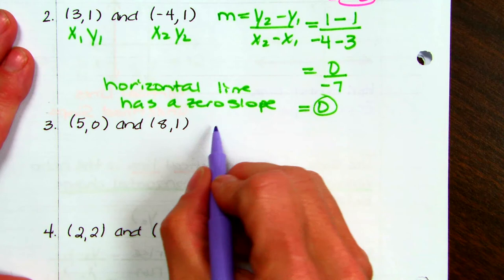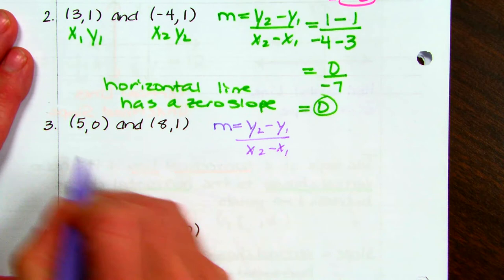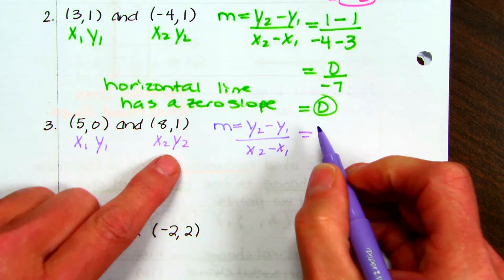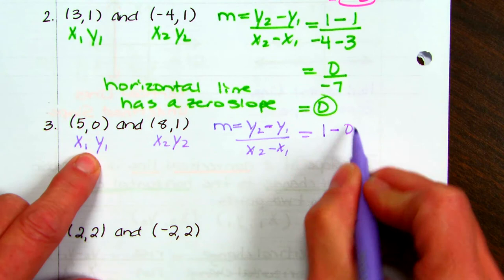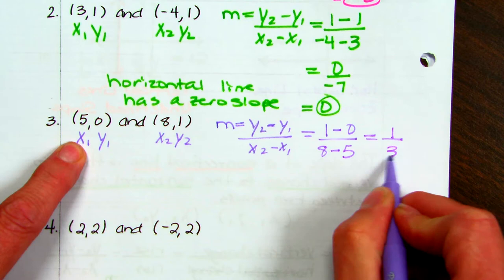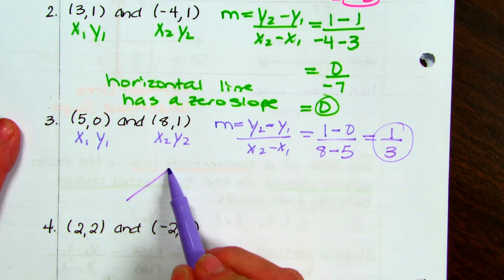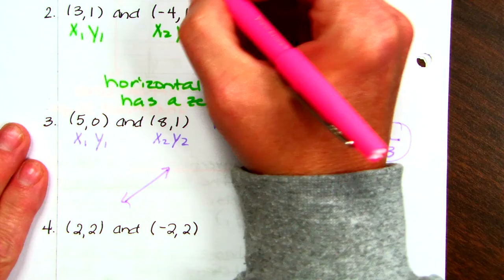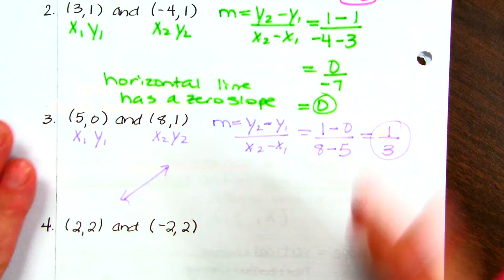For number 3, it's important to practice writing your slope formula so you have it memorized, and label your points so you substitute correctly. y2 is 1 minus y1 which is 0, divided by x2 which is 8 minus x1 which is 5. So we have 1 minus 0 is 1; 8 minus 5 is 3. The slope is 1/3, so this would be a line going up from left to right because it has a positive slope.